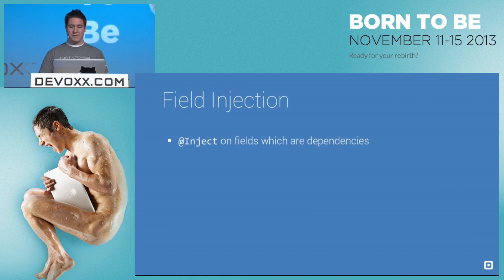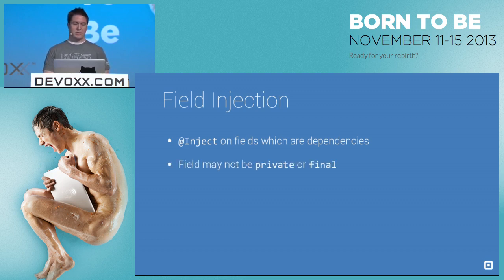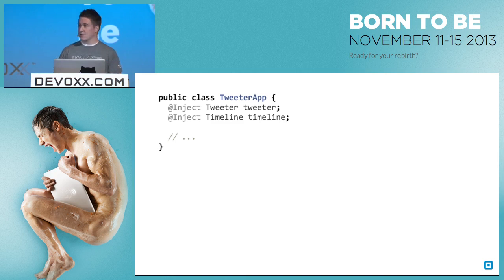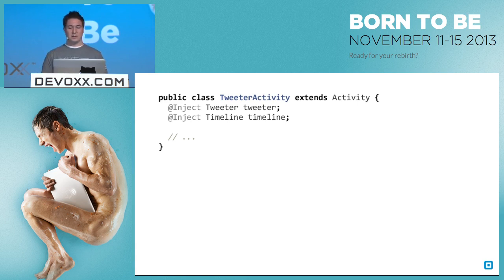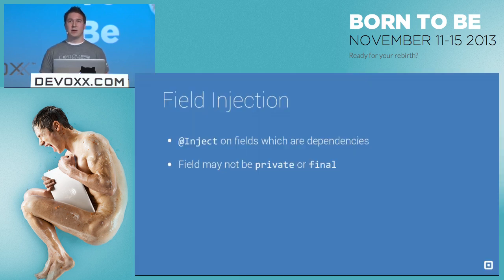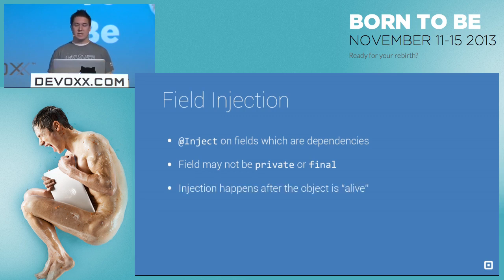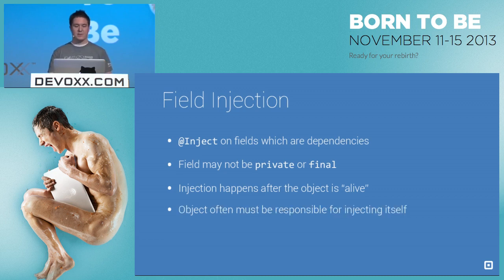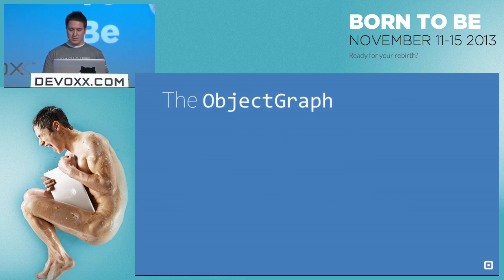Other than constructor injection, we have field injection. This is the one most commonly used on Android types. You put @inject on the fields, and those fields must not be private or final because they have to be set by Dagger. Where you would use this is something like an Activity on Android — it's useful for when the object is not created by you. Injection happens after the object has been instantiated. This is very common in Android — the platform is doing the instantiation of things like activities, services, etc. — and oftentimes this means you have to inject yourself because something else did the constructing.